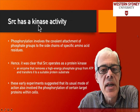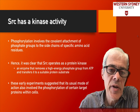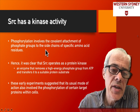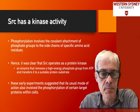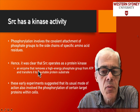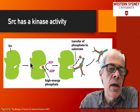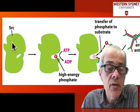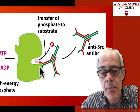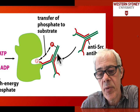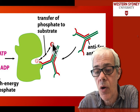Src is a tyrosine kinase, and the question is how that causes phenotypic changes. Phosphorylation is the addition of a phosphate to an amino acid residue. Src is able to phosphorylate other proteins. In experiments to establish this, researchers used an artificial substrate — an antibody that binds to Src — and Src was shown to phosphorylate it at a tyrosine residue, confirming that Src is indeed a tyrosine kinase.